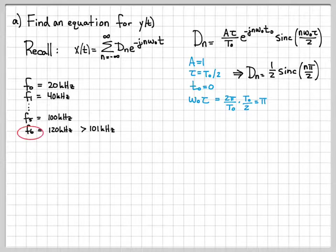And this is the first term that exceeds the cutoff frequency of my low pass filter. So it's this term, the sixth term in this summation, that is going to be completely rejected. All the previous terms will be multiplied by 10.